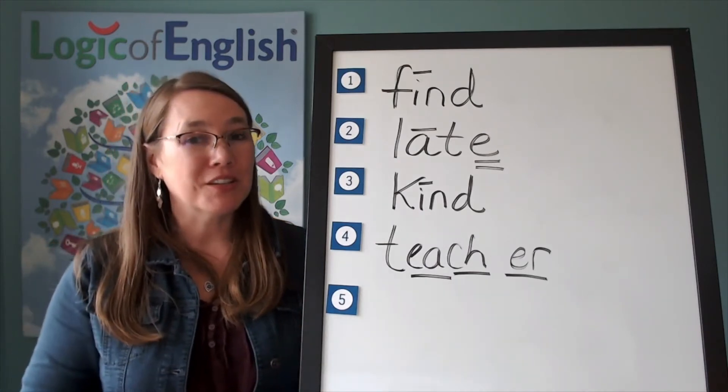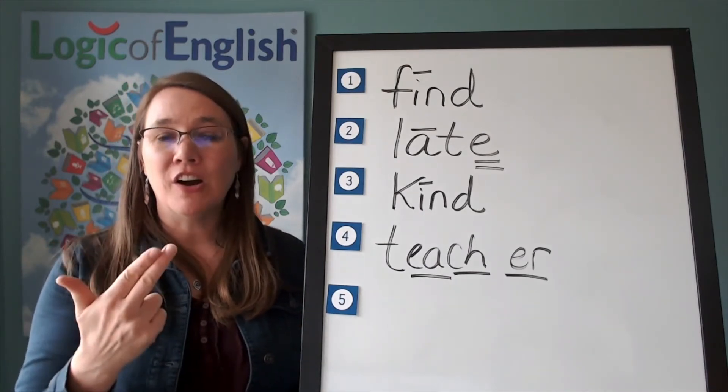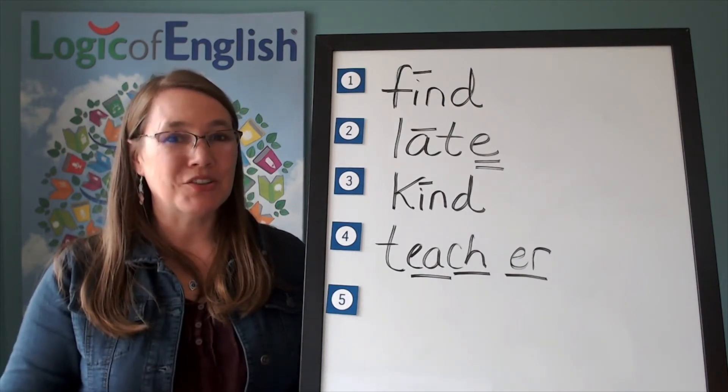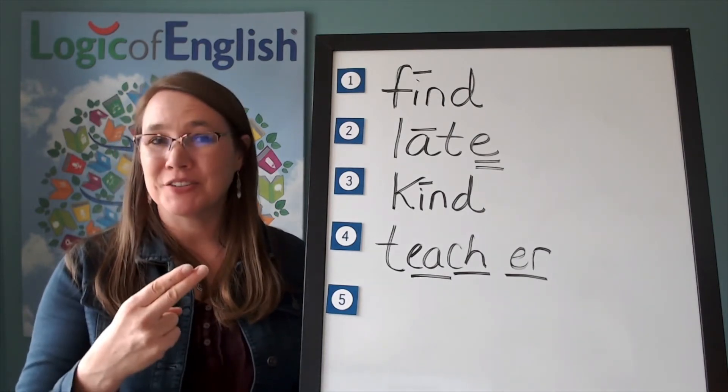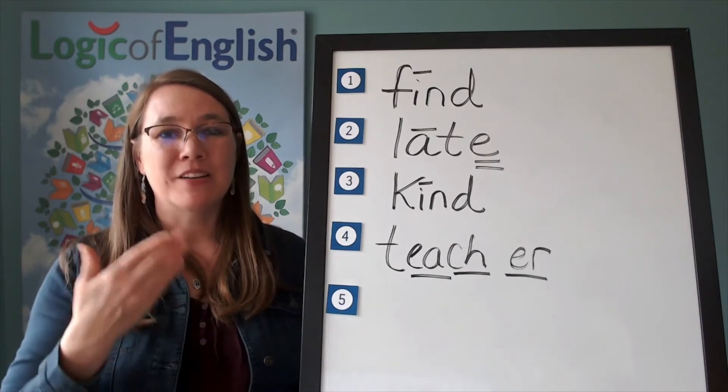The first syllable is farm. F-A-R-M. The second syllable is ur. Ur. The ur of her. Go ahead and write farmer.